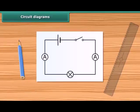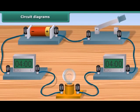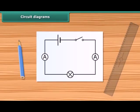A circuit diagram is a simplified representation of an electrical circuit. It is a drawing using standardized symbols of the arrangement, showing how electronic components are connected together.